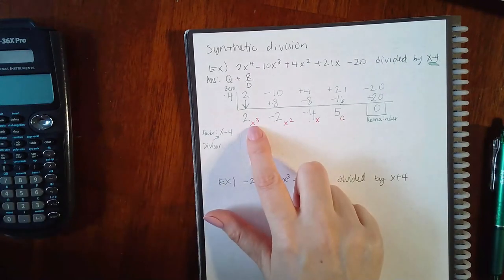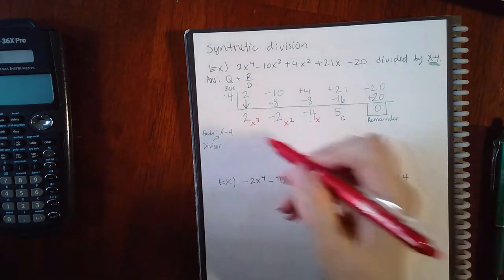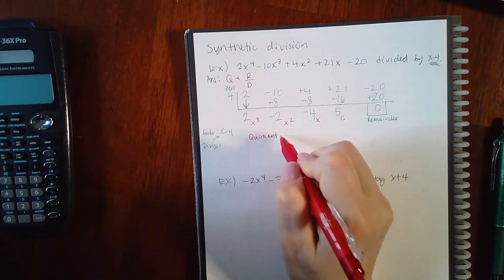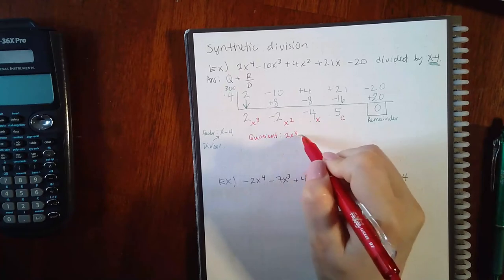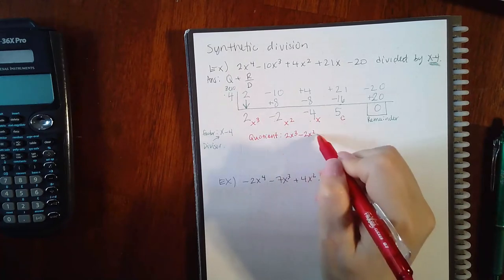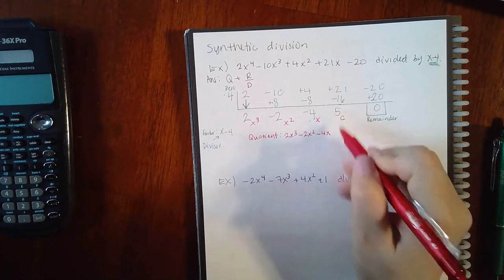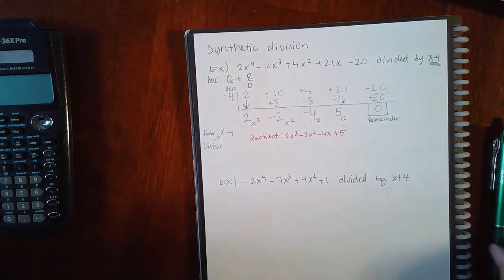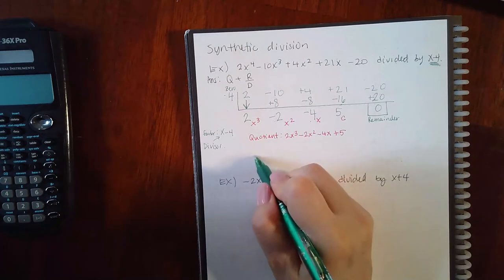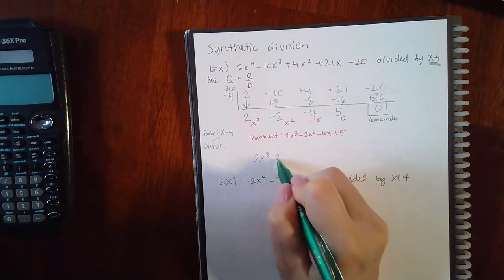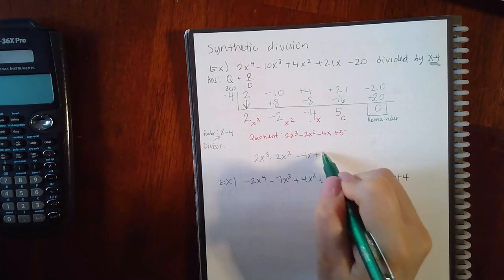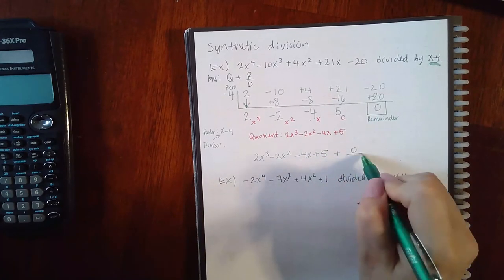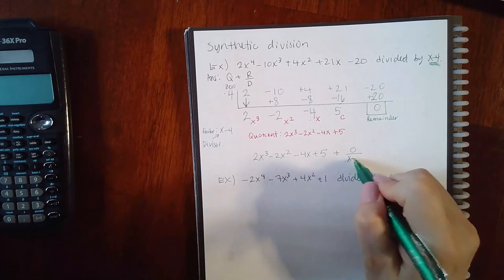For this particular problem, our quotient is 2x cubed minus 2x squared minus 4x, and this is positive so plus 5. They want you to write your answer in this form, so my final answer will be 2x cubed minus 2x squared minus 4x plus 5 plus my remainder of 0 over my divisor x minus 4.